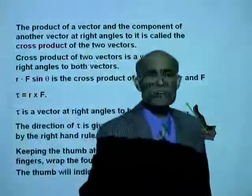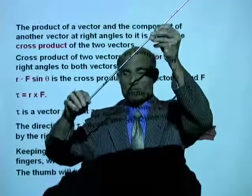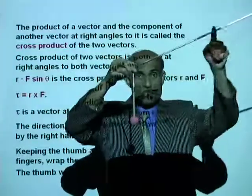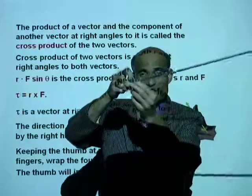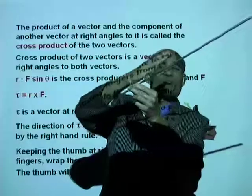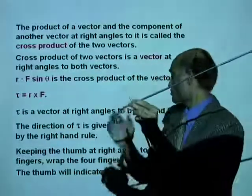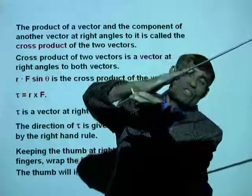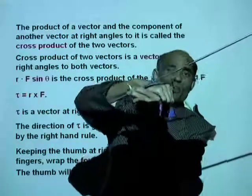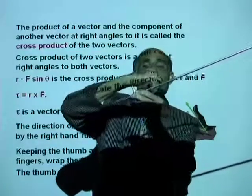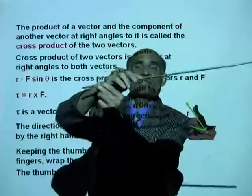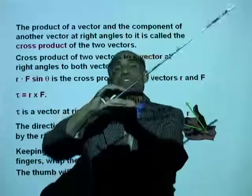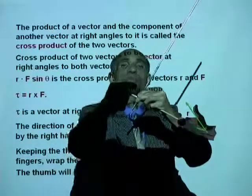That means if this is the R vector and this is the force vector — look at this. This is the R vector, this is the force vector. What you need to do is wrap your four fingers from R to F. Then the thumb will give you the direction. That means if the rotation is like this, the torque will be directed towards me. If the rotation is the opposite direction, the torque will be directed towards you.